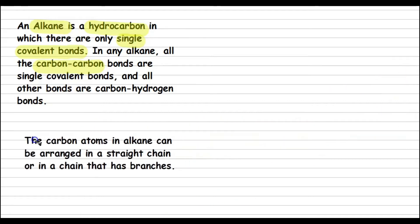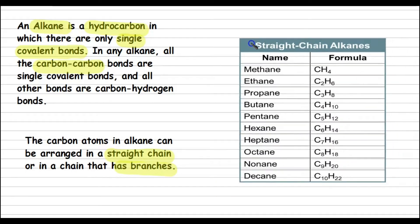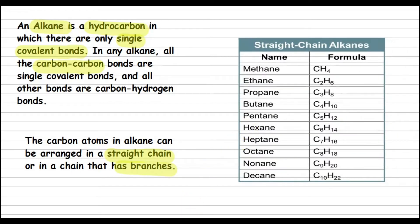The carbon atoms in an alkane can be arranged in a straight chain or in a chain that has branches. Recall that a carbon atom has four valence electrons and a hydrogen atom has one valence electron. So one carbon atom can form a single covalent bond with four hydrogen atoms. This brings us to the simplest alkane — methane with one carbon and four hydrogens — followed by ethane with two carbons, propane with three carbons, and so on.